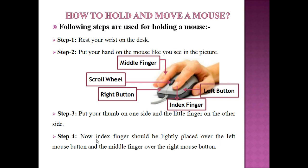Next, we discuss how to hold and move a mouse. Look at the picture carefully. You should hold the mouse as shown in the picture. Step 1 is rest your wrist on the desk. Step 2 is put your hand on the mouse like you see in the picture. Step 3 is put your thumb on one side and little finger on the other side. Step 4 is now index finger should be lightly placed over the left mouse button and the middle finger over the right mouse button.